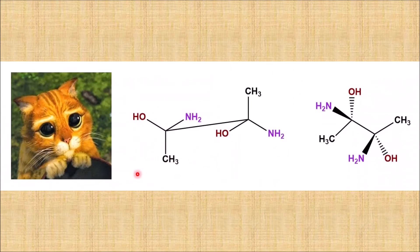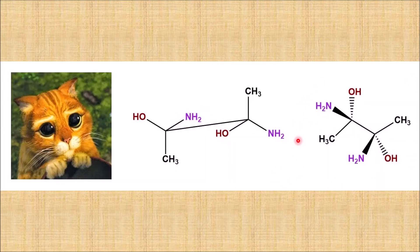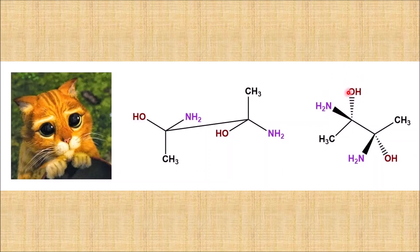Now let us do the reverse — converting sawhorse projection formula into wedge-dash projection formula. We start with the front carbon. From this perspective, the amino group is on the right, which means it is coming out of the plane of the paper. We write the four-carbon chain (carbons one, two, three, and four), and the amino group on the right is drawn on a solid wedge bond. The hydroxyl group on the left is going into the plane of the paper, so we write it on a dash bond. The methyl group in the plane of the paper is already written.